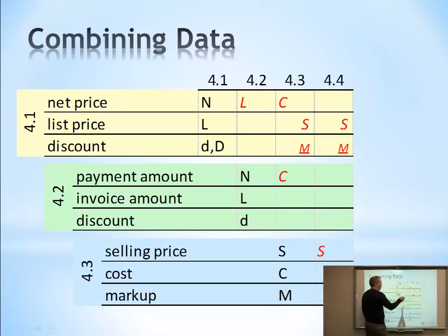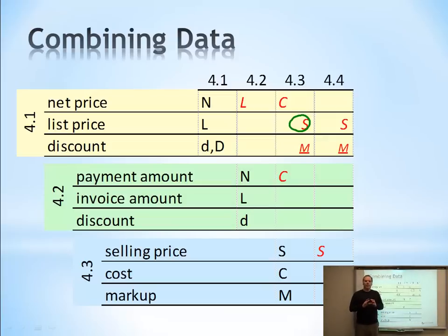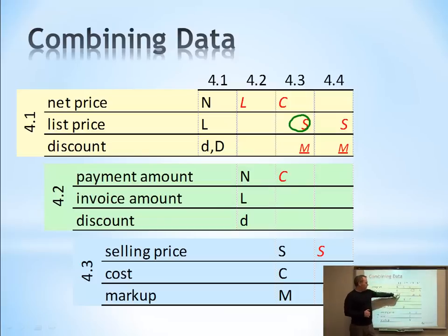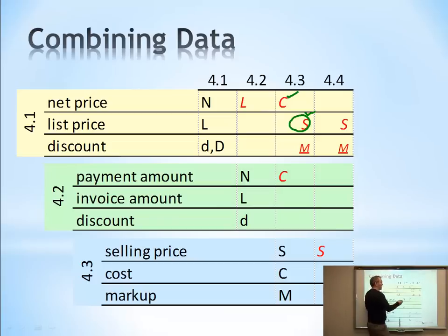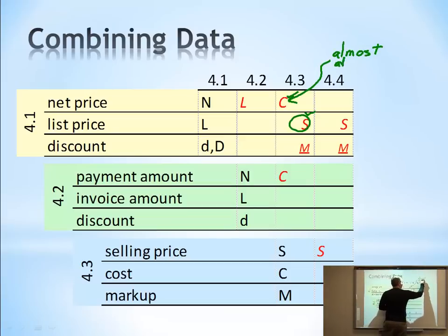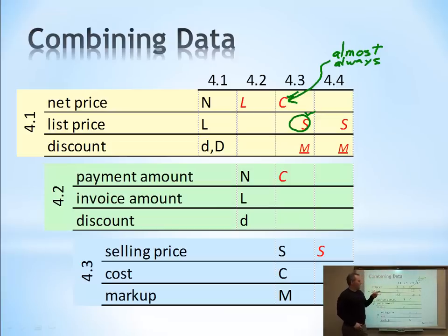Sometimes our list price is going to be our selling price — not always, but sometimes. When this occurs — for example, Apple Computer, where everybody has to sell at the same price because the manufacturer enforces a suggested retail price — the actual discount would be the markup. But it only happens if both conditions apply; it's a very special situation. Usually the net price becoming the cost happens almost always, and this special case happens rarely.